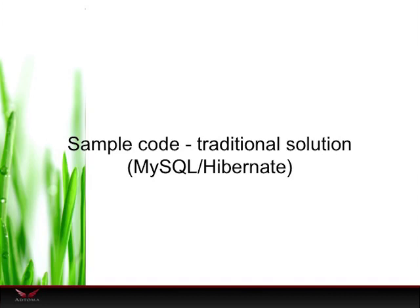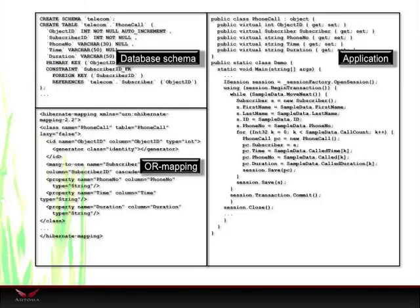Let's look at some example code — in this case using MySQL and Hibernate for the traditional solution. We would need to define the database schema, where we define data names, property names, tables, relations, data types, and so on. Then we need a layer to translate between the database and the application, and of course the application code itself, where we again define property names, data types, relations, and so on. Hopefully we use a good pattern to implement them similarly in both layers, but there's a lot of code just to do a simple task in the system.